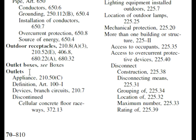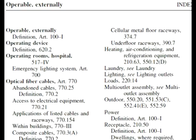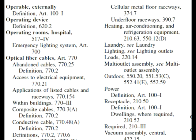Here we are in the index at outlets, and there's nothing really here that helps us out. We're at the bottom of the page and have to go to the next column. Looking at what we have: Receptacle 210.50 — that's the number we had when we went to receptacles. Dwellings, required: 210.52. So a lot of times it starts at .50 and continues through, so 210.52 and also required 210 Roman numeral III. These sections are probably right next to each other.